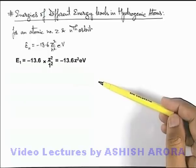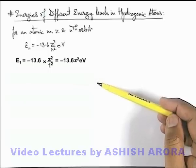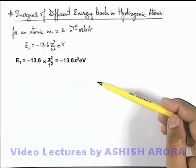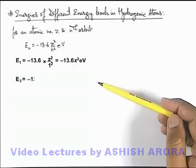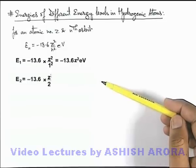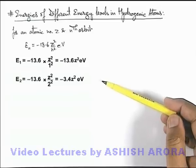Now if we substitute n equals 2, the energy of second orbit we are getting is 13.6 by 2 squared. That will be 4, so the result we are getting is minus 3.4 Z squared electron volts.